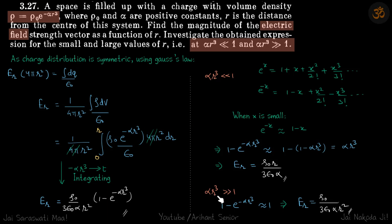When αr³ is much greater than 1, we can neglect the small terms in the additions and subtractions. This term becomes approximately 1, and our answer is ρ₀ by 3ε₀αr². Just so you don't get confused: when αr³ is much greater, this term is very small because it goes in the denominator.